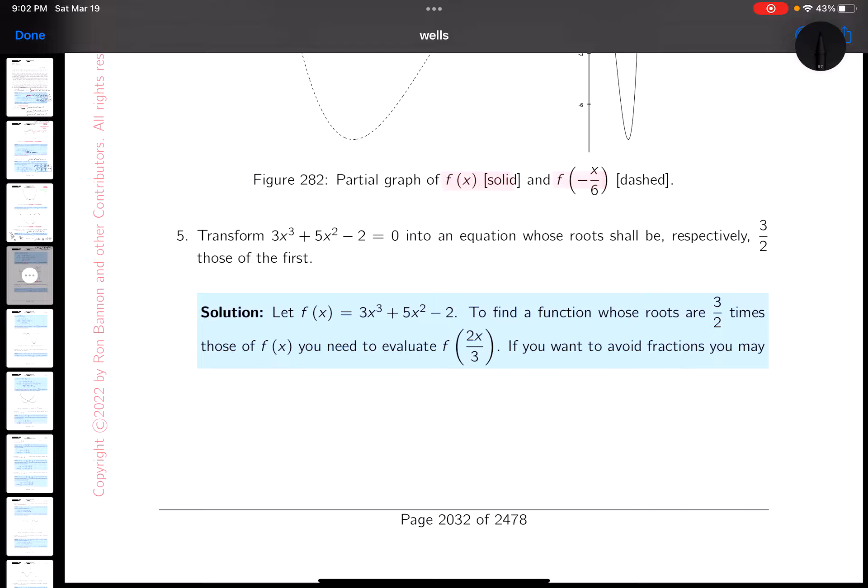Again, a standard transformation. Let's write this down as f of x, and that's 3x cubed, plus 5x squared, minus 2.